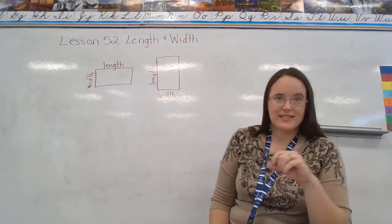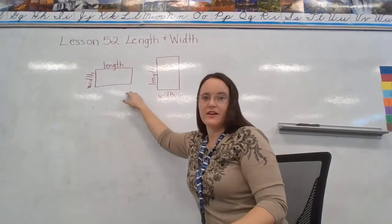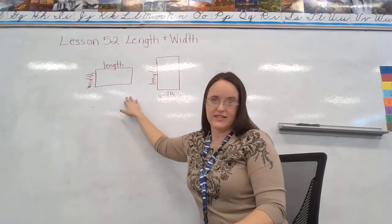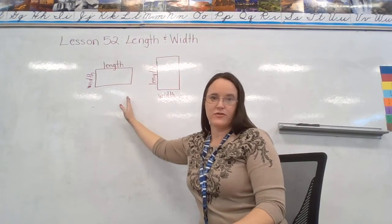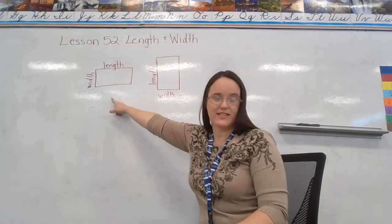we look at the longest side, and we call it the length. So in this example here, the length goes horizontally, and the width goes vertically, and that's because the longer side is horizontal.